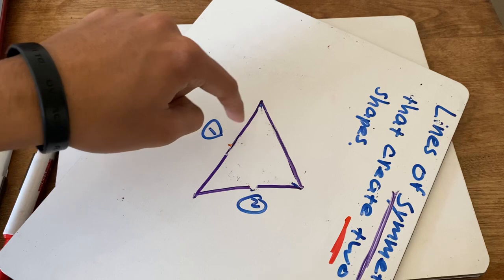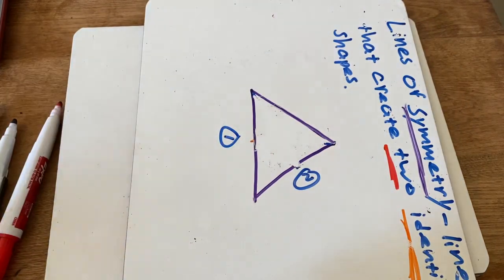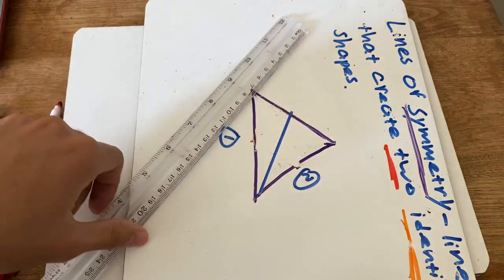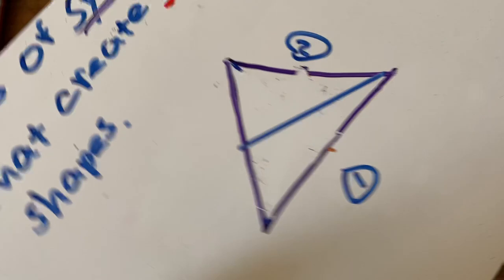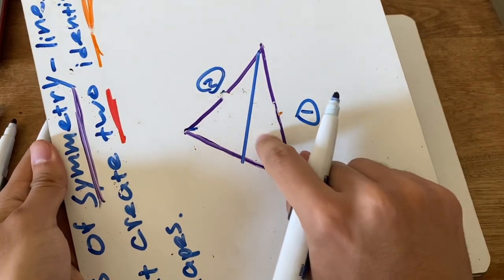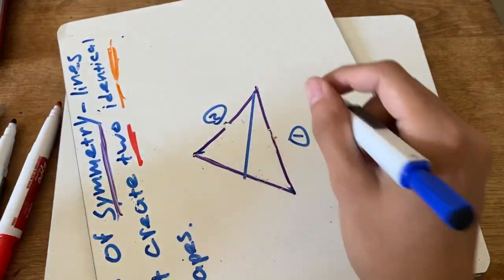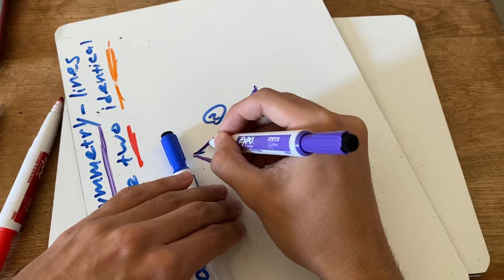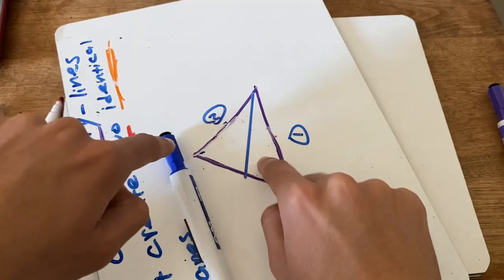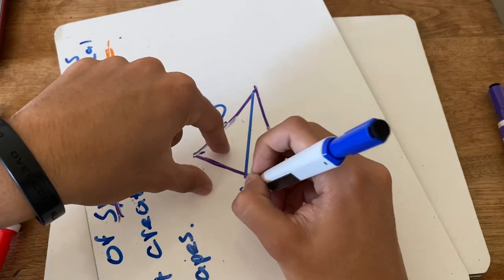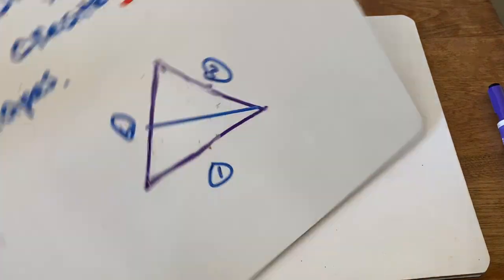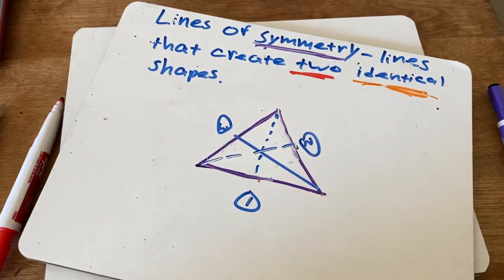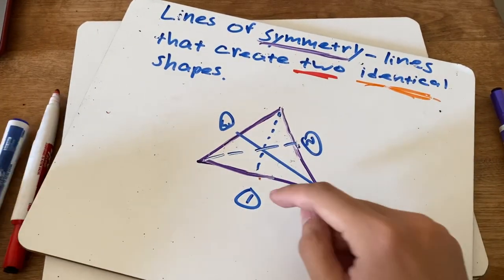I cut it in half from this point and that point — I could also do it from this point here. Again because of my erasing it looks like the shapes aren't the same size, but they are. This side is the same as the other shape. So in this triangle, I have three lines of symmetry: the first line, the second line, and this third line.